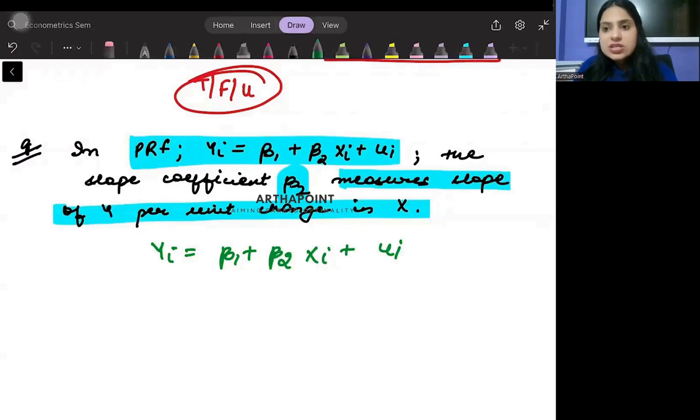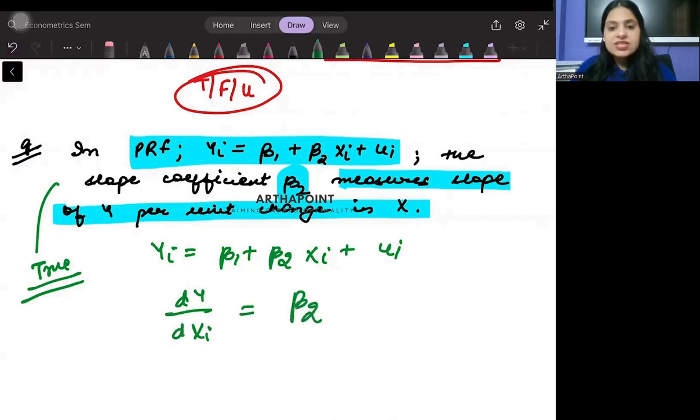In the first analysis you may say that this statement is true, because when I will find dy by dxi, it will give me the answer as beta 2, right? So you may say that yes, this is correct, this is the slope coefficient and it is equal to the change in y due to the change in x's.